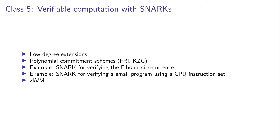Then we will see how this is going to be used in SNARKs. We are going to look at what verifiable computation means. We will be talking about low-degree extension of polynomials. Since polynomials are so important, we will also be talking about polynomial commitment schemes — most importantly, FRI and KZG. Then we will discuss some very basic examples of SNARKs: one for verifying the Fibonacci recurrence, which is a favorite example in many SNARK explainers. We will also look at a small program showing how you can make a SNARK for CPU instructions, which is related to Zero Knowledge Virtual Machines.